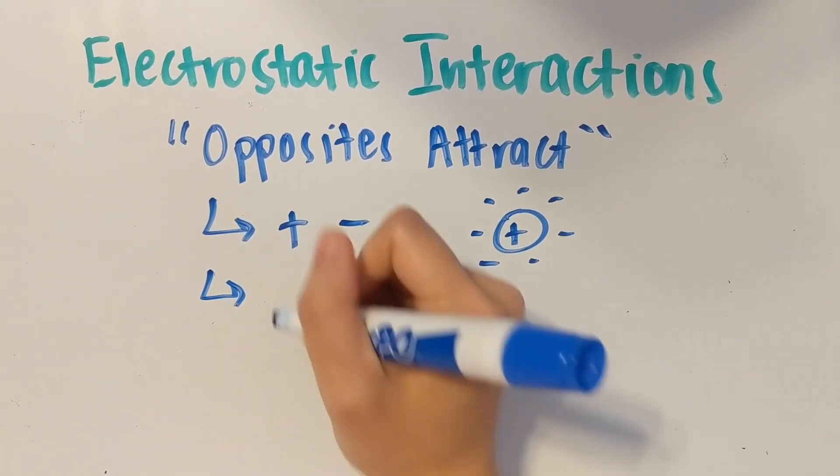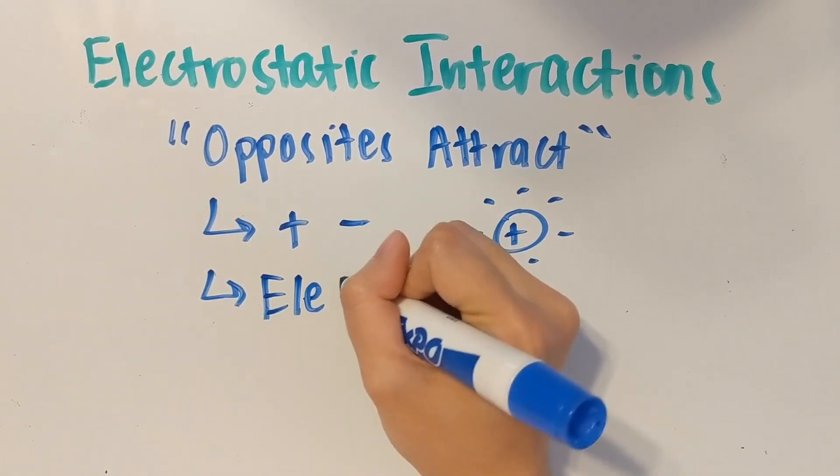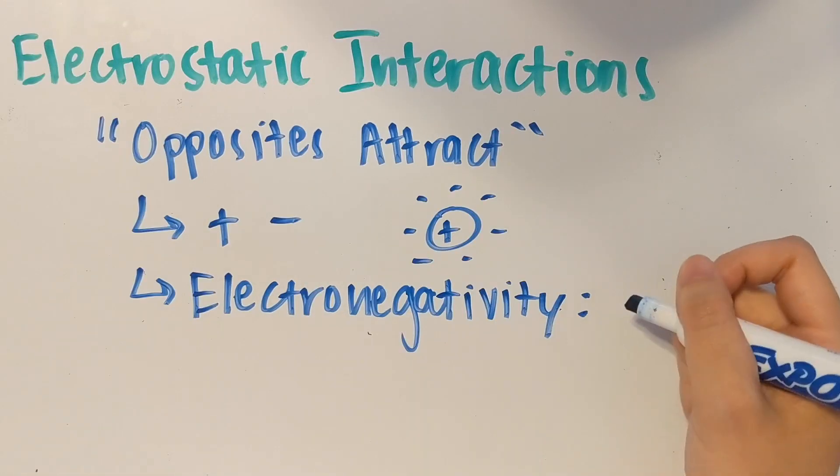Another main concept within the realm of electrostatic interactions is electronegativity, and this is basically a measure of how much something can attract electrons.